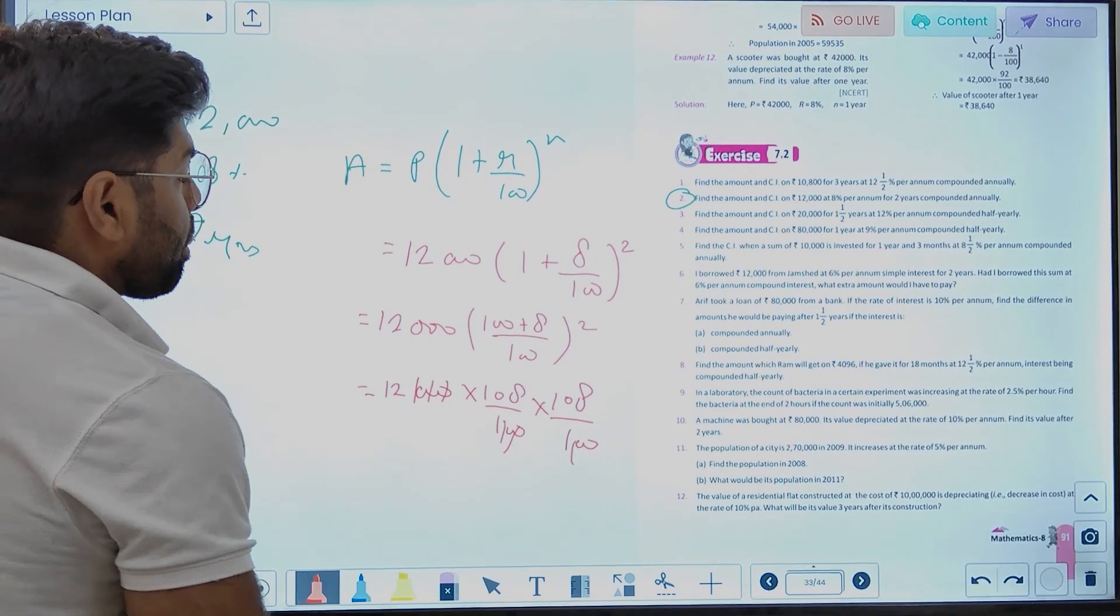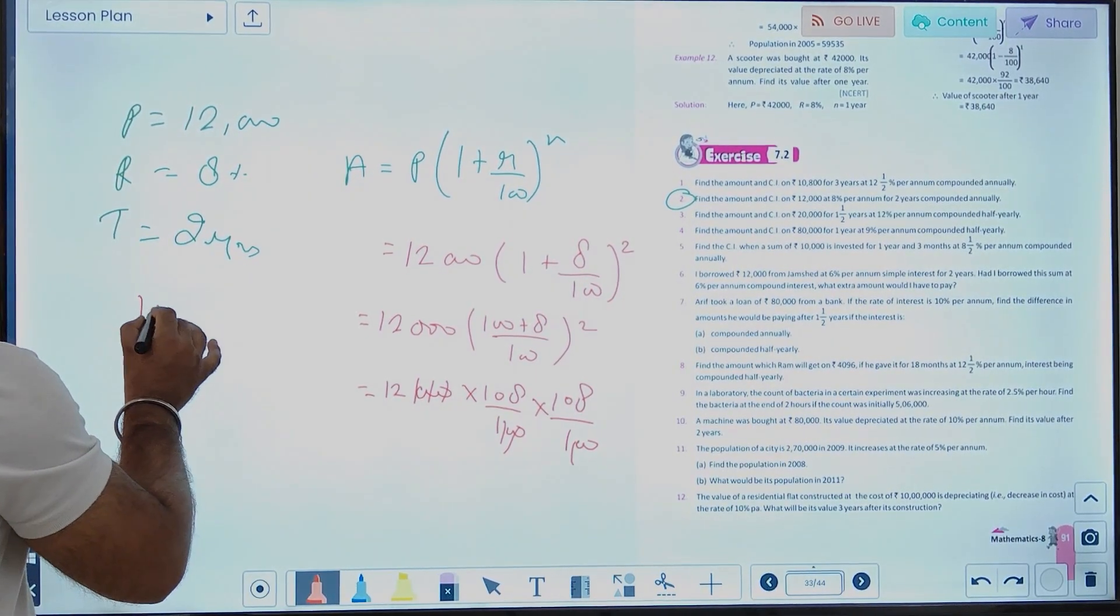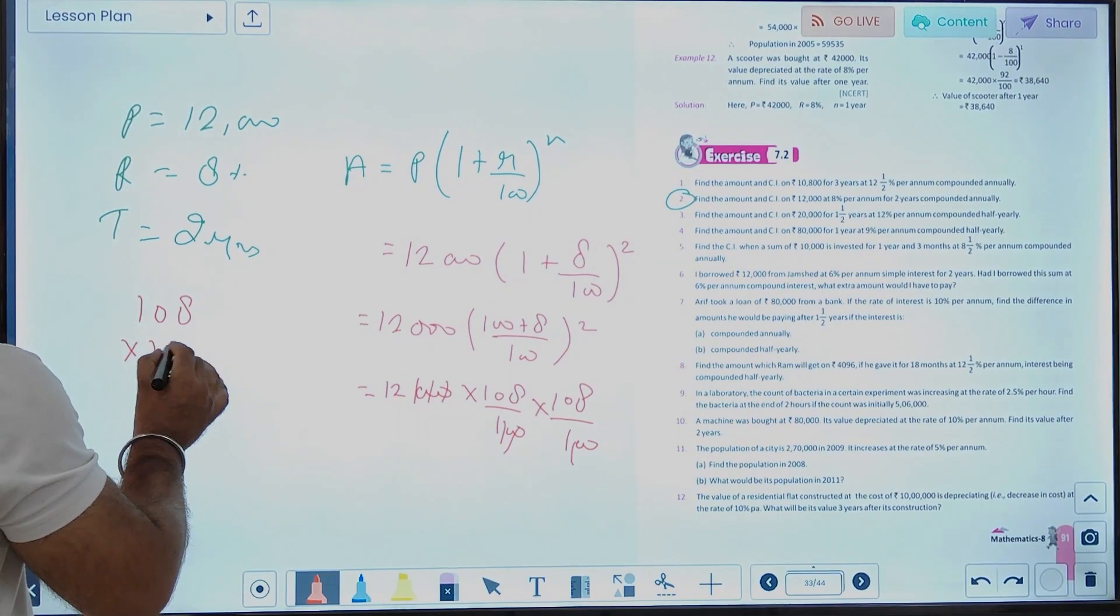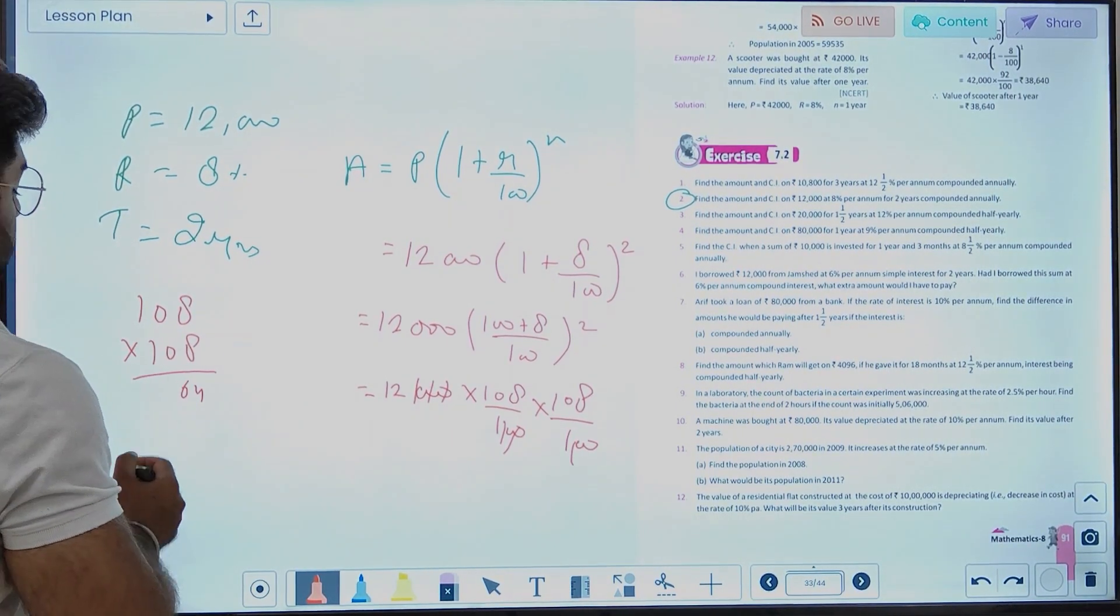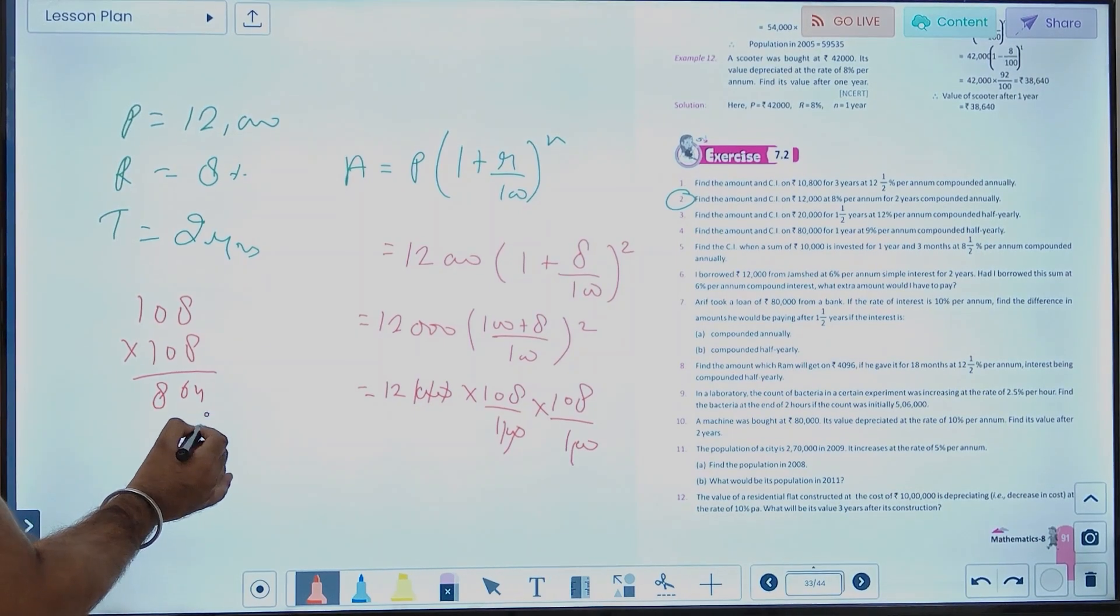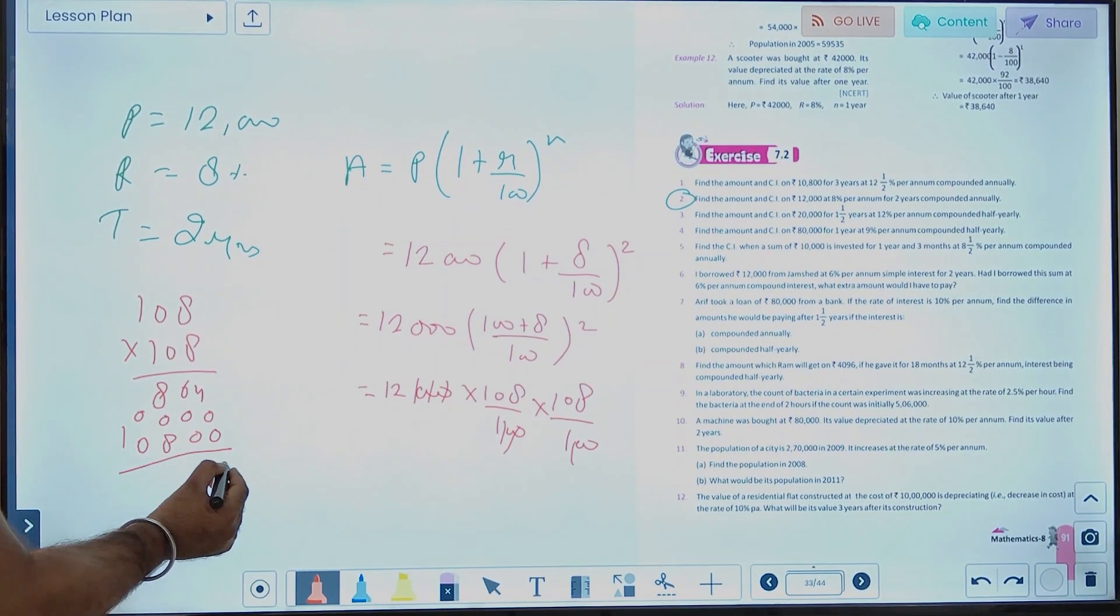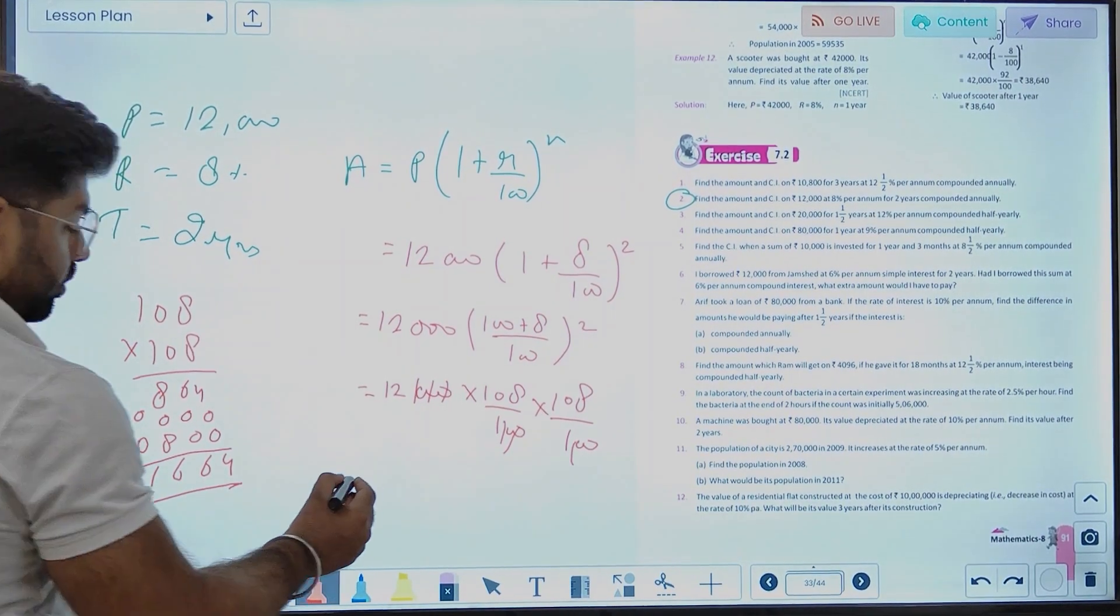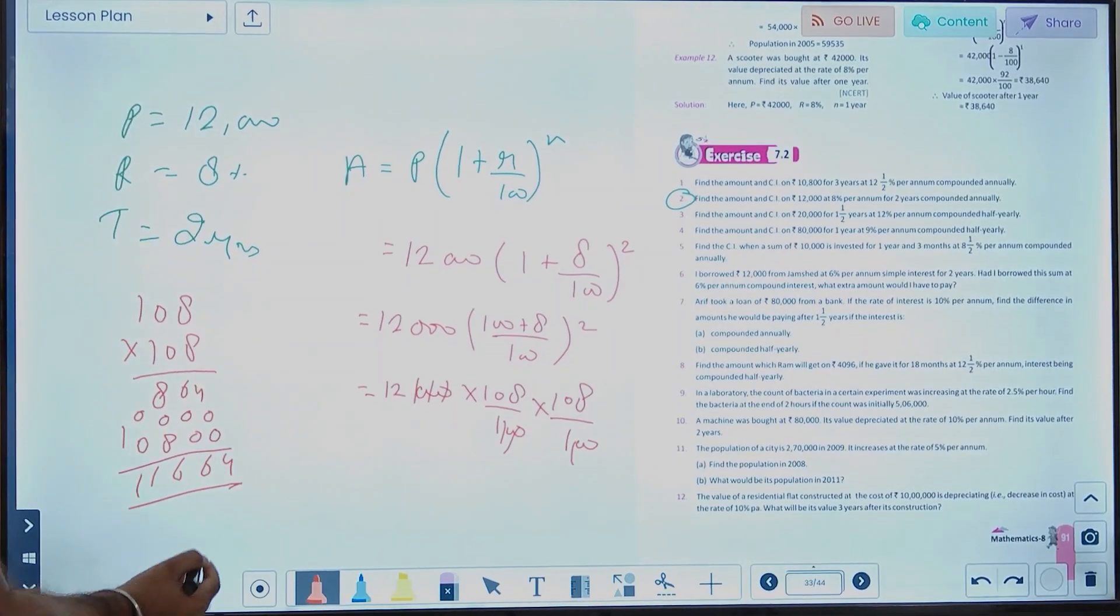Now, if we simplify, we'll get 12,000 into 108 upon 100 into 108 upon 100. Now, we'll calculate. 108 into 108: 8 times 8 is 64, carry forward. Working through the multiplication step by step.